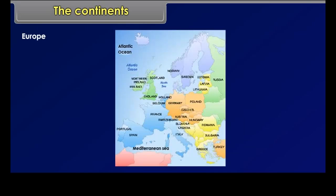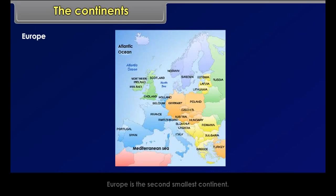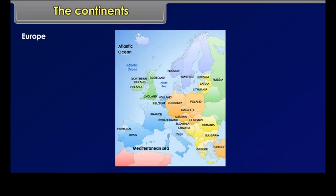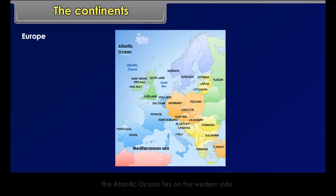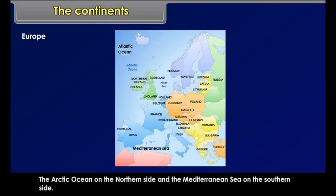Europe. Europe is the second smallest continent. Water bodies bind it on three sides: the Atlantic Ocean on the western side, the Arctic Ocean on the northern side, and the Mediterranean Sea on the southern side.